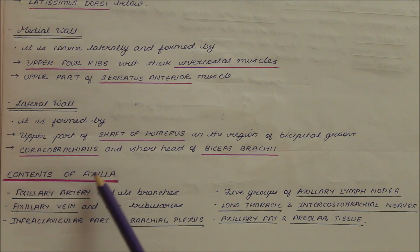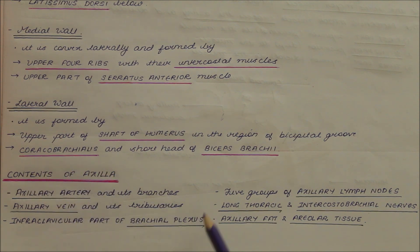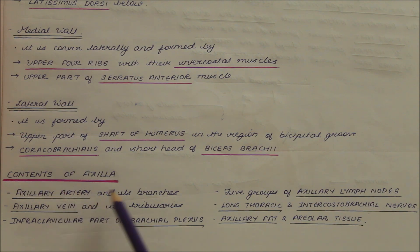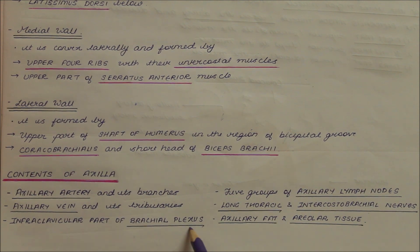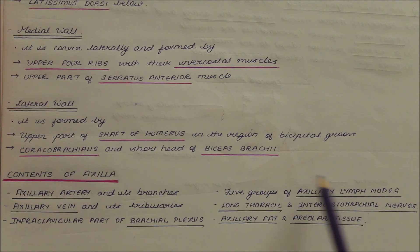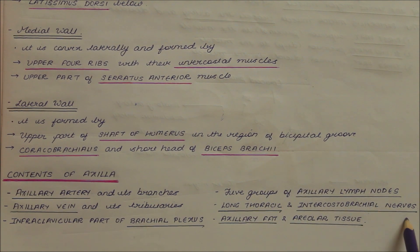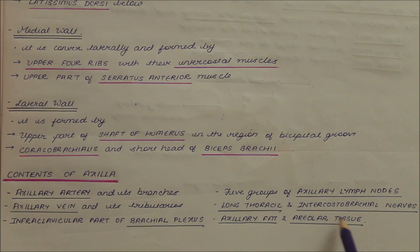Now let us look at the contents of the axilla, concised in six main points: the axillary artery and its branches, the axillary vein and its tributaries, the infraclavicular part of the brachial plexus, five groups of the axillary lymph nodes, the long thoracic and intercostal brachial nerves, and finally the axillary fat and areolar tissue.